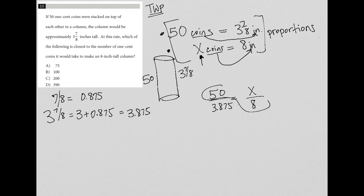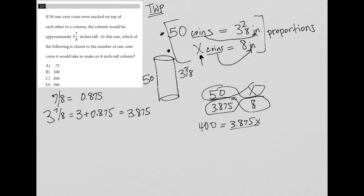When I cross multiply this — which is how you solve proportions — I get 50 times 8, which is 400, equals X times 3.875, which is 3.875X. I can divide both sides by 3.875, and what I get when I put this in my calculator is 103.225... equals X.